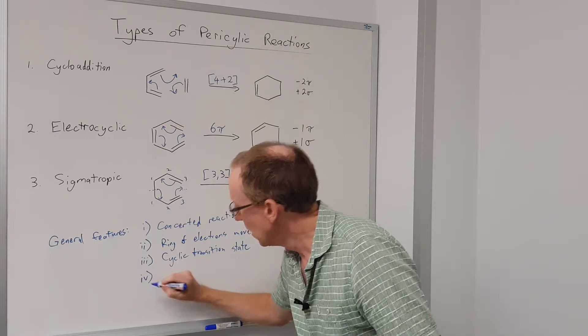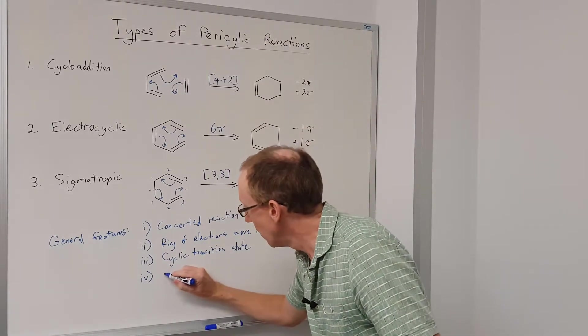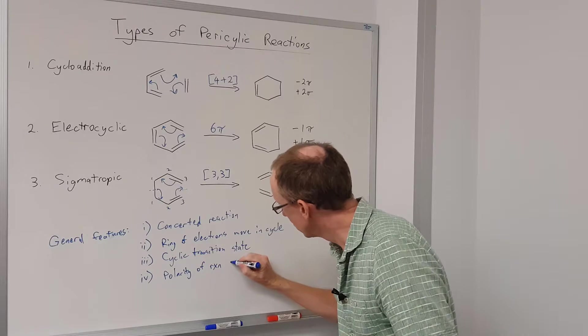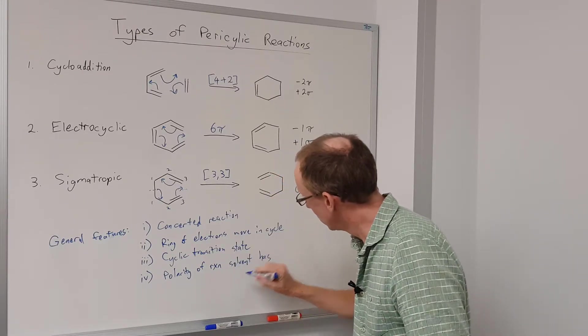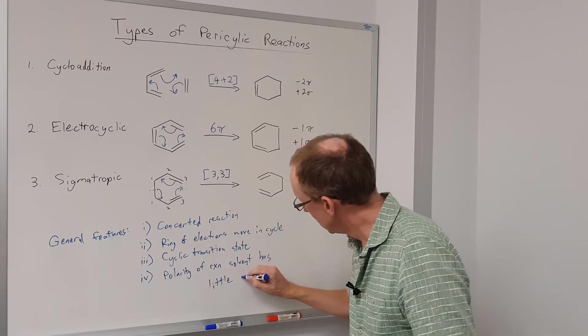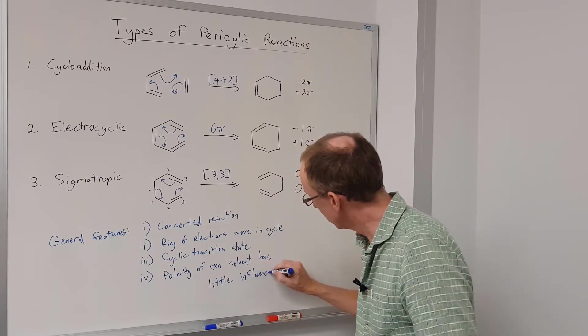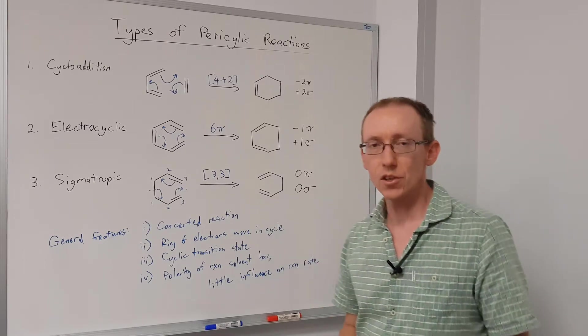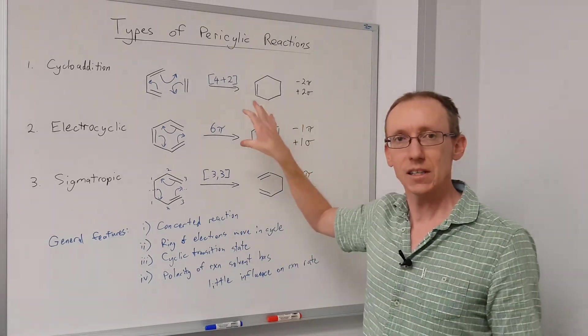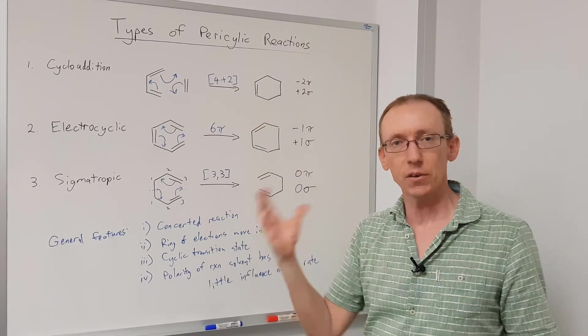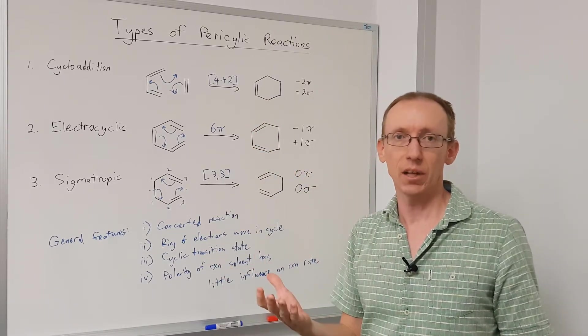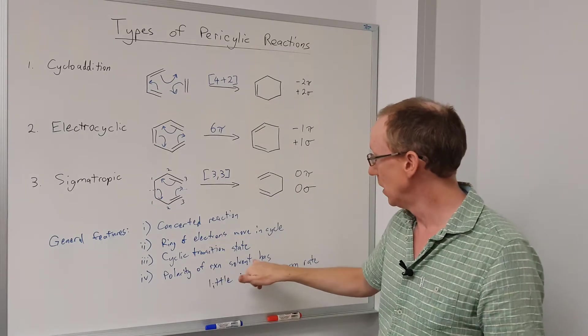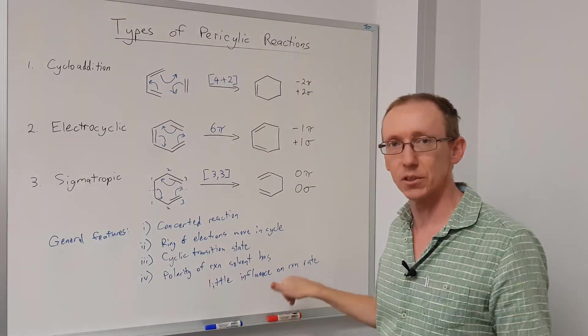And finally, empirically we find that polarity of the reaction solvent has little influence on the reaction rate. Okay, so that's important because if we had ionic intermediates, we would expect those to be stabilized to different extents by different polarities of the solvent. Whereas without any ionic species being involved in these reactions, in general, the polarity of the reaction solvent has very little influence on the reaction rate.